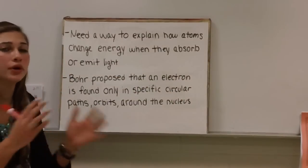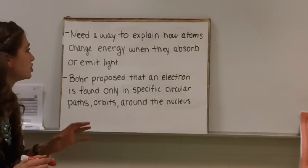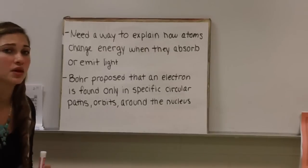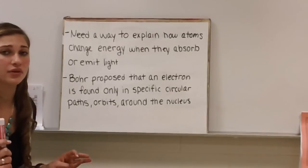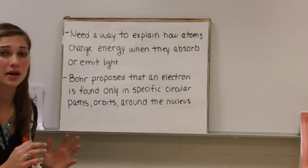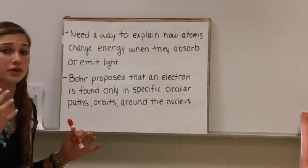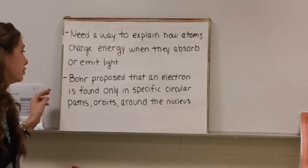Bohr came up with this model because he needed to explain how atoms change energy when they absorb or emit light. What he came up with were circular paths around the nucleus that electrons were on. They couldn't just be anywhere circling all over. They had to be in specific orbits around the nucleus.